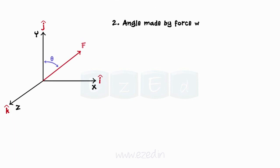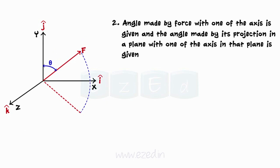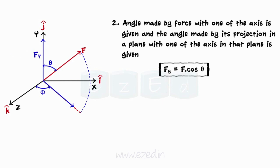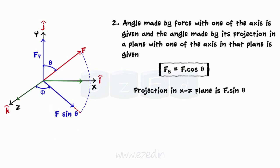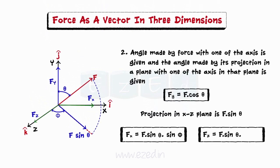In the second type, the angle made by the force with one of the axes is given, and the angle made by its projection in a plane with one of the axes in that plane is given. We will first resolve the force into two mutually perpendicular components. The first component will be along the axis with which the angle of force is given — that is, Fy equals F cos theta. Another perpendicular component is the projection of force in the X-Z plane, which is equal to F sin theta. Next, we will resolve the projection along the two axes in the plane of the projection. Hence, Fx is equal to F sin theta sin phi, and Fz is equal to F sin theta cos phi.